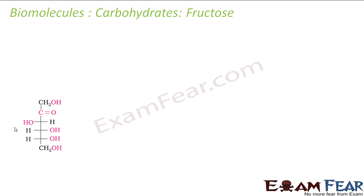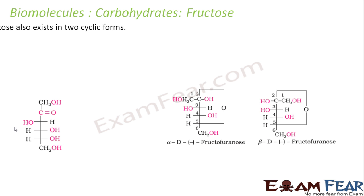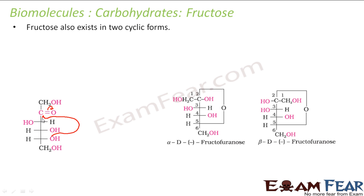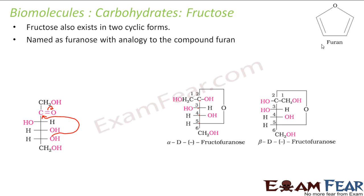Let's talk about fructose a little bit more. This is the open structure of fructose. Similar to glucose, which also has an open structure and a cyclic structure, fructose also has two cyclic structures. The reaction happens between the OH and a carbon in the chain. In the ring we have only 4 carbons and 1 oxygen, so you get a structure similar to furan — it is called the furanose structure.